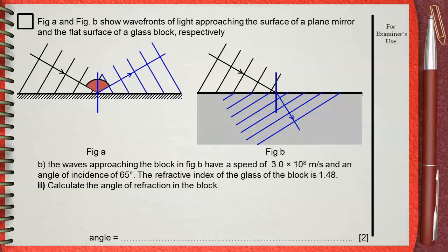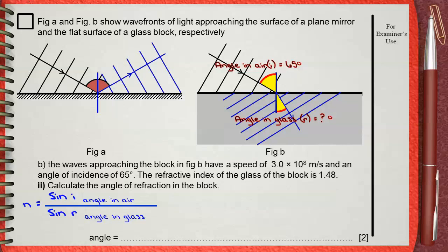Another rule of the refractive index is: refractive index equals sine of the angle in air (in our question, the angle of incidence) divided by sine of the angle in glass (in our question, the angle of refraction).